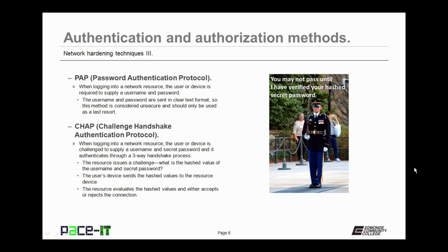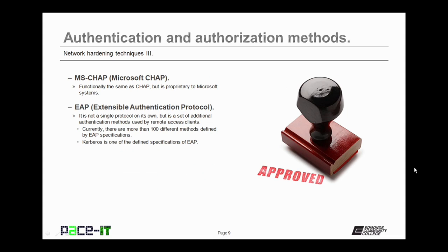Here's how CHAP works: the resource issues a challenge — it wants to know the hashed value of the username and secret password. The user's device sends the hashed value to the resource device. The resource evaluates the hashed value and either accepts or rejects the connection. By using CHAP, the username and password are never sent in clear text, making it much more secure than PAP. There's also MSCHAP, which is functionally the same as CHAP but is Microsoft's proprietary implementation of it.